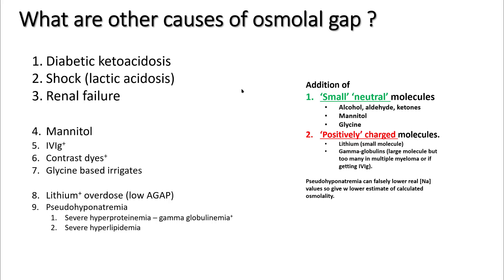Pseudohyponatremia can falsely lower real sodium values, giving a lower estimate of calculated osmolality. Other medications like mannitol, glycine-based irrigants used in urology surgeries, can also give a higher osmolal gap.